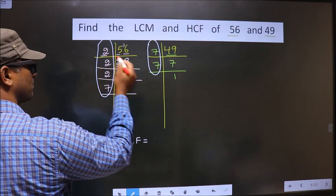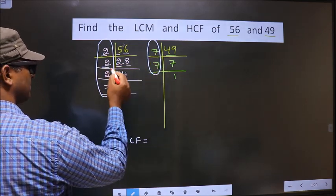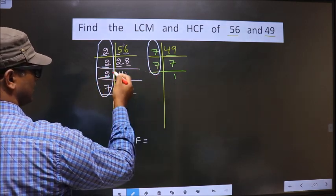Starting with the number 2. Do we have 2 here? No. So, go to the next number 2. Do we have 2 here? No. So, next number is 2. Do we have 2 here? No.